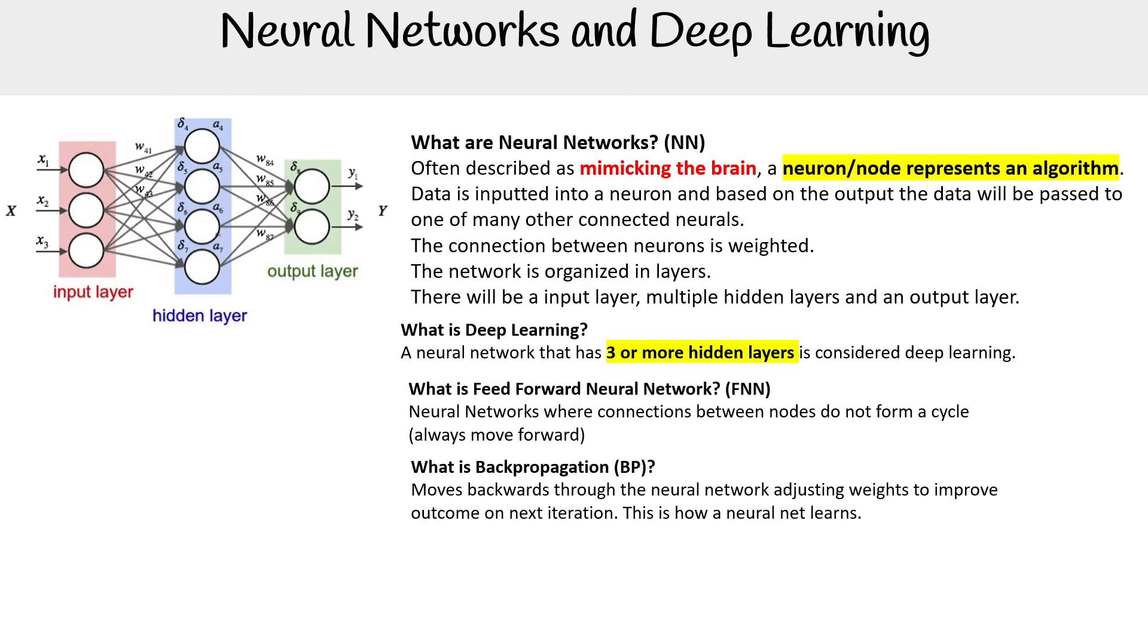Then you have backpropagation. This is where after everything's run through, it's going to move backwards through the neural network and adjust the weights to improve the outcome on the next iteration. So after it's run, it actually has to update all the weights, and that is backpropagation. This is how a neural network learns. It has to do backpropagation.